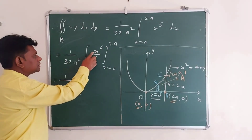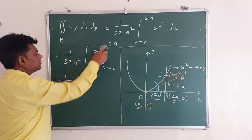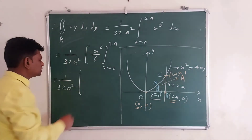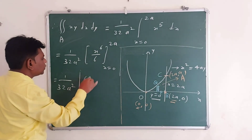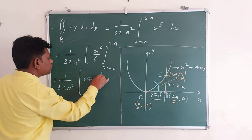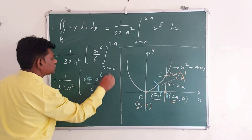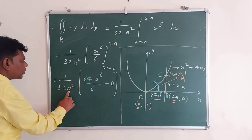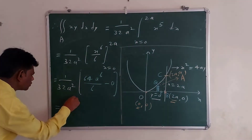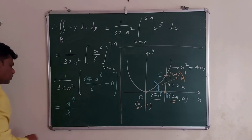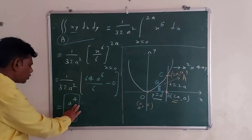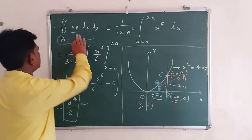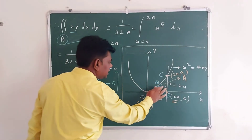Substituting the upper limit X = 2A: (2A)⁶ = 64A⁶, so we get 64A⁶ / 6, and the lower limit is 0. The final answer simplifies as A⁶ / A² = A⁴, giving A⁴ / 3. Therefore, A⁴ / 3 is the required answer of the given double integral over region A.